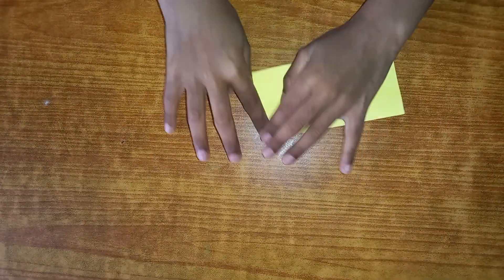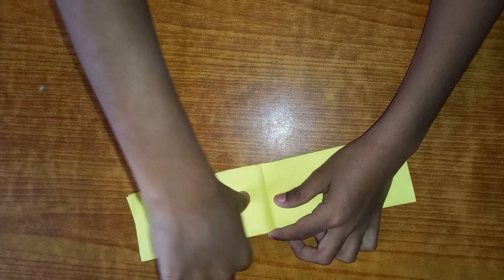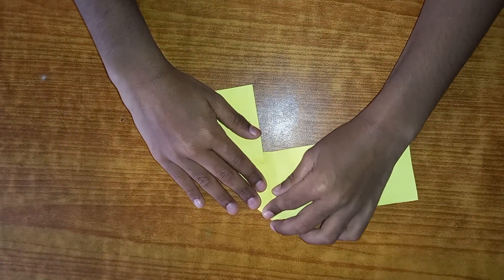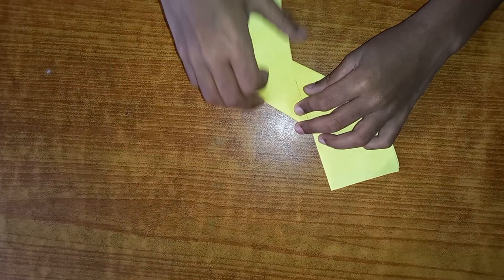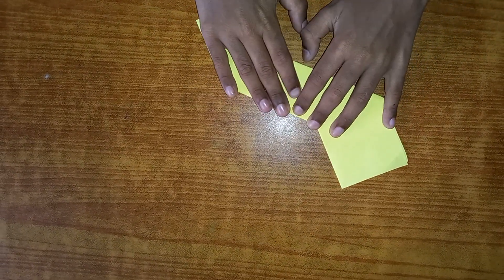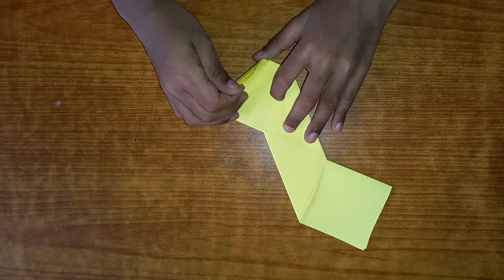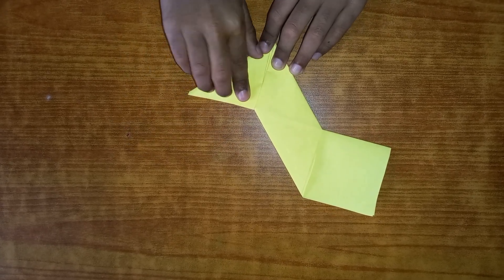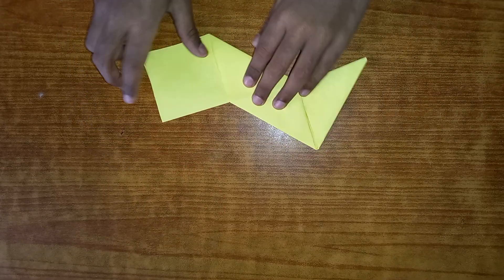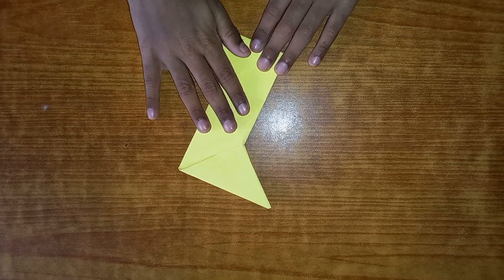Now what we're going to do is open it. Take this and join it with the middle point. It will come like this for you. Change the side and do it like that. Remember guys to be perfect. Now flip it and do it. You'll get like this. If you don't get it properly, you can pause the video.